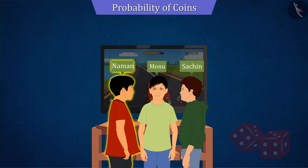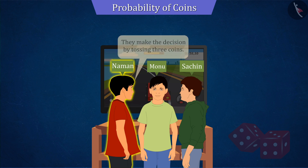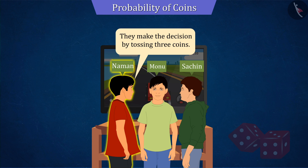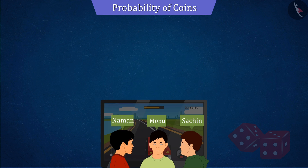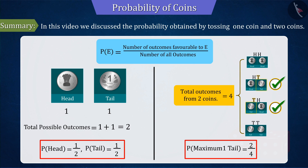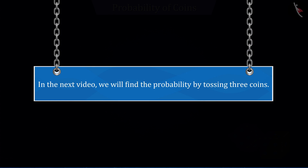But Naman is not happy with this and asks to take the decision by tossing three coins instead of two coins, which we will see in the next video. In this video, we discussed the probability obtained by tossing one coin and two coins. In the next video, we will find the probability obtained by tossing three coins.